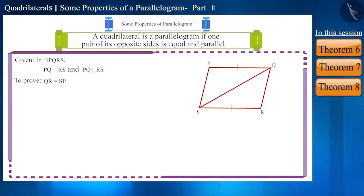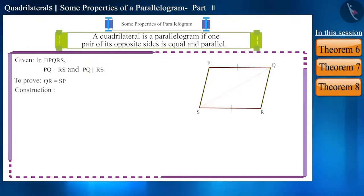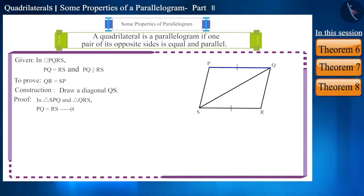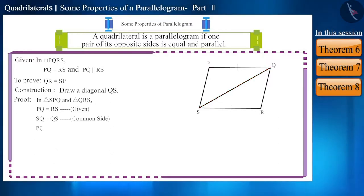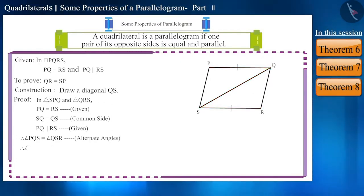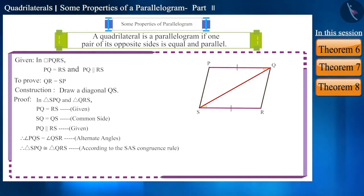Therefore, we will prove the congruence of two triangles which consist of sides QR and SP. We will draw diagonal QS. Now we have triangle SPQ and triangle QRS. In triangle SPQ and triangle QRS: side PQ is equal to side RS, side QS is the common side, and side PQ is parallel to side RS. Therefore, angle PQS is equal to angle QSR because these are alternate angles. Therefore, triangle SPQ and triangle QRS are congruent according to the SAS congruence rule.